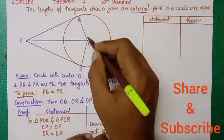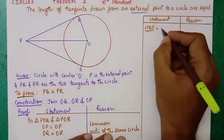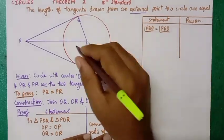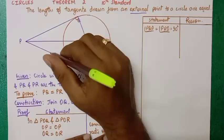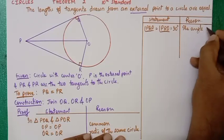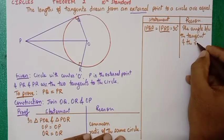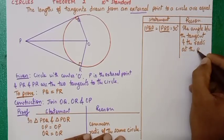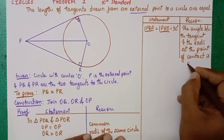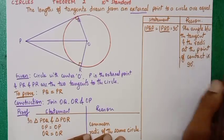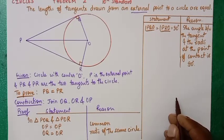Angle PQO is equal to angle PRO, because both are equal to 90 degrees. The angle between the tangent and the radius at the point of contact is 90 degrees — radii and tangents are perpendicular at the point of contact.